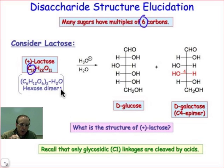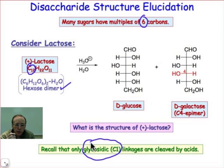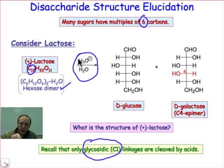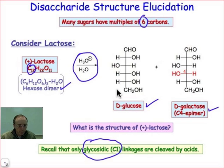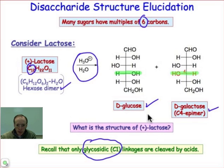In other words, lactose is a hexose dimer, and when we subject it to hydrolysis — recalling that the glycosidic bond, that acetal bond, is going to be broken under hydrolysis conditions — we're going to end up making the 2 monosaccharide building blocks. In the case of lactose, one obtains D-glucose and D-galactose. These 2 sugars are actually very similar — they're both hexoses, and the only thing that differs is their stereochemistry at C4. They're epimers at C4, differing only by that one stereochemical position.